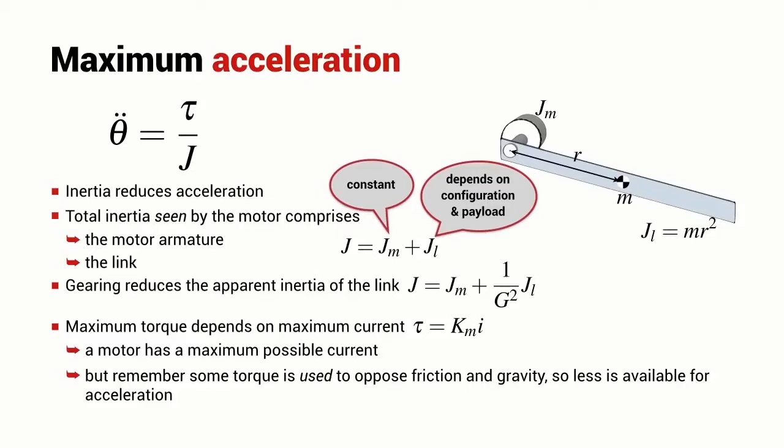Also remember that some of the torque generated by the motor is used to oppose friction and also to oppose gravity in the motor. So, less of it is actually available for acceleration. What we've defined here is an upper bound on the maximum acceleration of the robot joint.